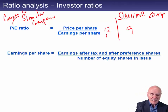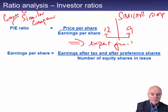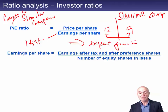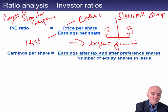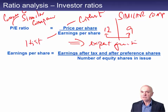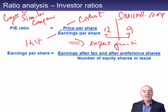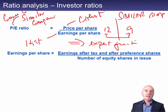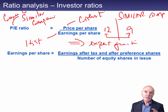A high P/E ratio compared to similar companies means the market expects growth. The earnings per share figure is historical — last year's earnings — but the share price is current. So the current share price reflects what you're paying for future earnings, not past earnings, which in a way distorts what the P/E ratio seems to be saying. As for earnings per share, people like to see it going up. It's more fundamental than dividends per share, since directors can change dividends with great latitude, but earnings per share is not really in their direct control. Rising EPS effectively means the company is really doing pretty well.